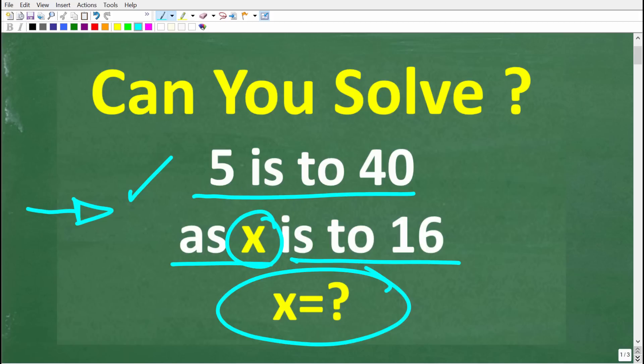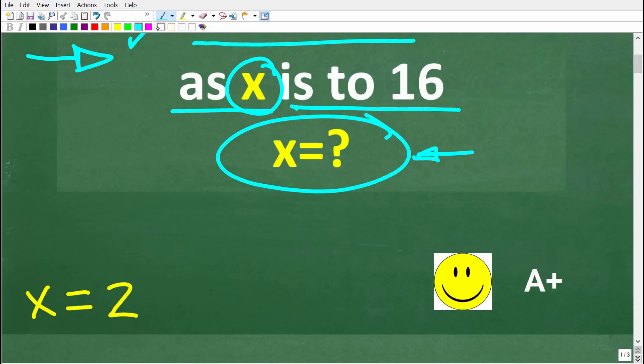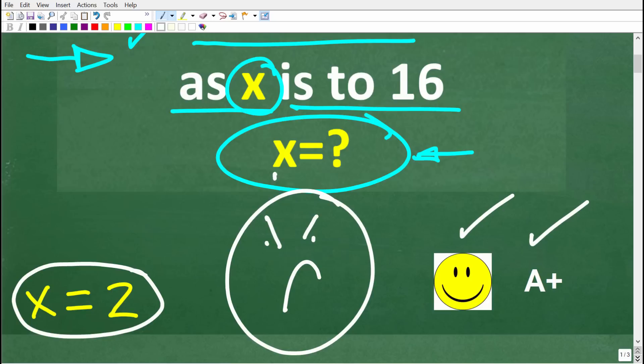Okay, so 5 is to 40 as x is to 16. What is x equal to? Well, the correct answer is x is equal to 2. All right, now, if you got this right, you definitely get a happy face and A+. You'll be like, Mr. U2 Math, man, this seems like a very easy problem, but I'm still a bit confused. Well, actually, there's a few different ways to solve this question or to figure out the answer to this question.